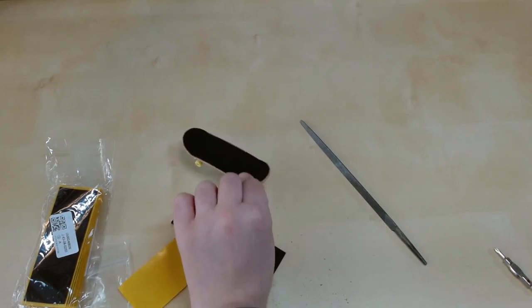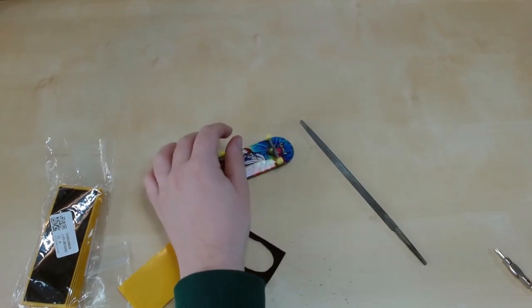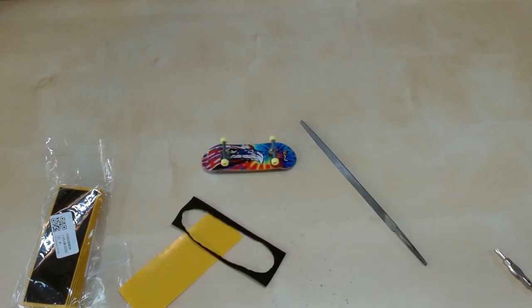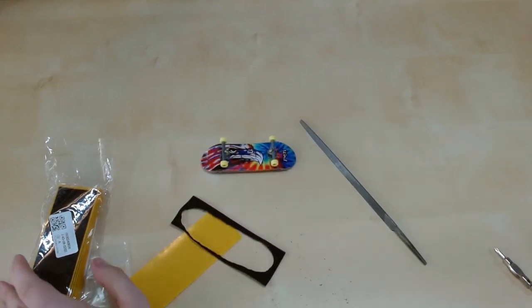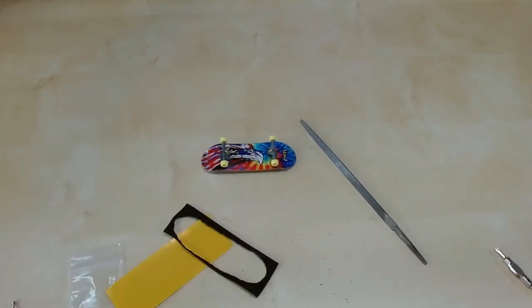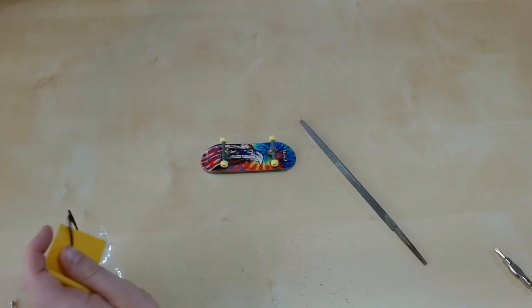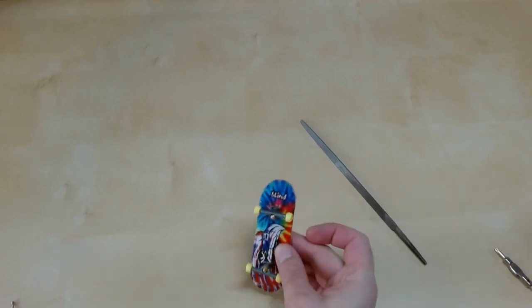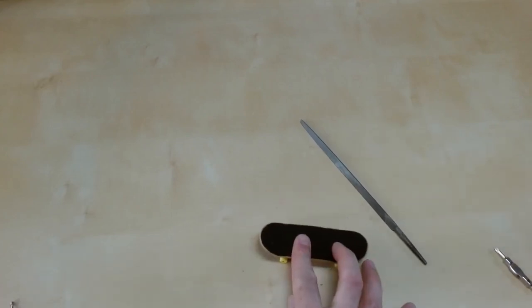And there you go. We've switched out the wheels, we've changed out the bushings, we put on the foam tape, and literally now there's nothing we can't do with this. It rides as good as our Dynamic, it rides as good as our Black River, at least as far as the ability to do tricks with. Thanks for watching. Hopefully you enjoyed this episode, and there you go - that's how you turn your tech deck into a pro fingerboard.